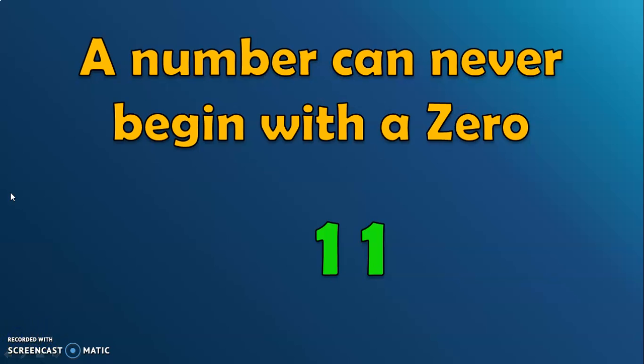To quickly summarize what all we learned with respect to zero, zero means empty or no objects. Zero, when it is alone, does not have any value. But, when it is used as a placeholder, it helps to read and write numbers properly. And, the last rule we saw is, a number can never begin with zero.